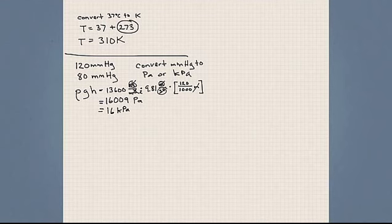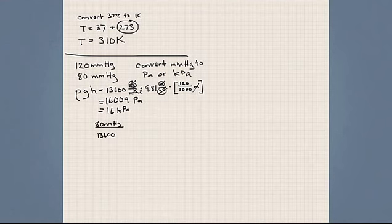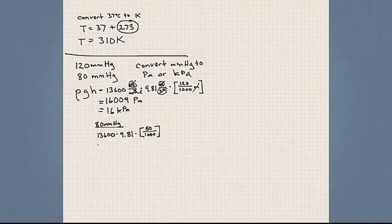Now let's convert 80 millimeters of mercury to Pascals. We take the density of mercury times the gravitational constant 9.81 times the column height of 80 millimeters, converting to meters. Multiplying these out gives 10,673 Pascals, or approximately 10.7 kilopascals.